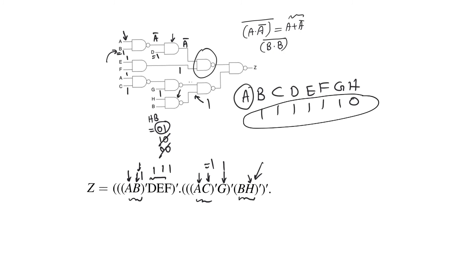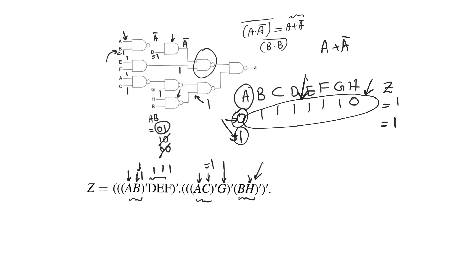Why does the glitch appear? For this input combination, regardless of the value of A — whether zero or one — the function Z should equal one. However, for this particular transition we are relying on A to keep the function equal to one, because the other variables won't. We rely on A+Ā, which is normally one. But because of differential delay, both A and Ā will momentarily be zero for a limited period of time, which is enough to cause a glitch.